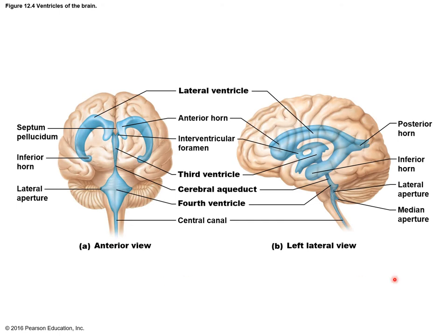In anterior view, the lateral ventricles are embedded in each cerebral hemisphere and look like a C-shape. In lateral view, the lateral ventricles connect to the third ventricle via the interventricular foramen, and the third ventricle connects to the fourth ventricle via the cerebral aqueduct. The CSF can flow all the way down, and the fourth ventricle is continuous with the central canal of the spinal cord.